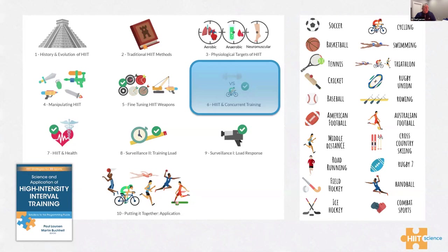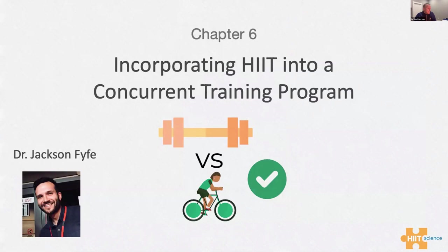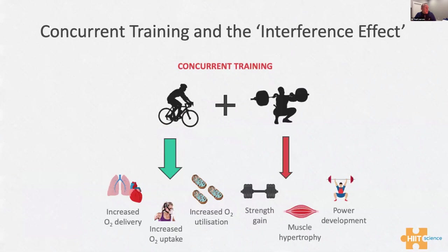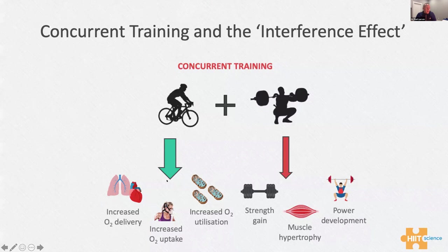That's really what we try to teach within HIIT Science — how to cater a HIIT session to be most appropriate in the micro cycle. This leads into the concurrent training chapter — the hidden concurrent training effect. When we do version two, we'll probably place this chapter earlier, but within the concurrent training program this is led by Dr. Jackson Fife from Deakin University in Melbourne.